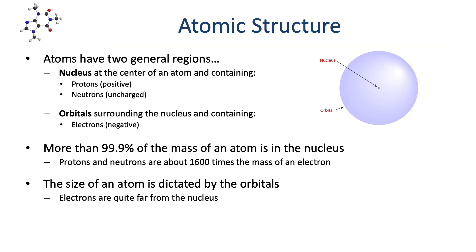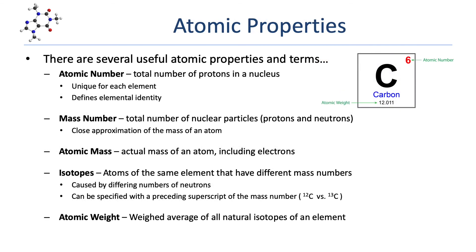There are a number of atomic properties and terms that we're going to review. A lot of this is going to be familiar, but it's amazing how much of this stuff is forgotten or terms can be confused. The atomic number of an element is simply the total number of protons in the nucleus, and this number is unique for each element. Here I've got a blow-up of the carbon atom from the periodic table, and up in the top right corner you can see the atomic number of six. Every carbon atom in the universe is going to have six protons — it's what defines the element.